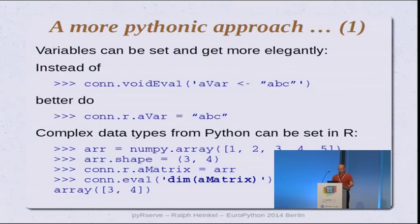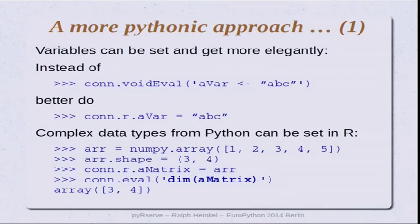It's also possible to set more complex data. Here I create a NumPy array in Python, give it a shape, and assign that array to a variable called A_matrix. That NumPy array is serialized and sent over to R, and a native R array is created on the R side. The last call with con.r.eval('dim(A_matrix)') shows you can access that array in R and get the dimension as a result.